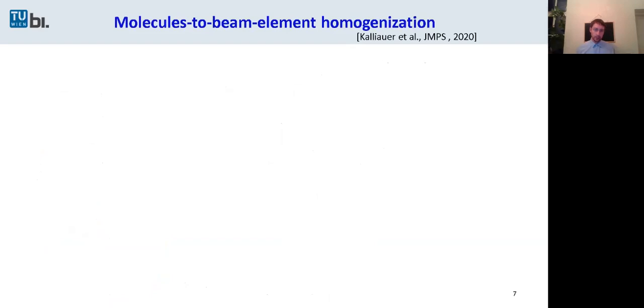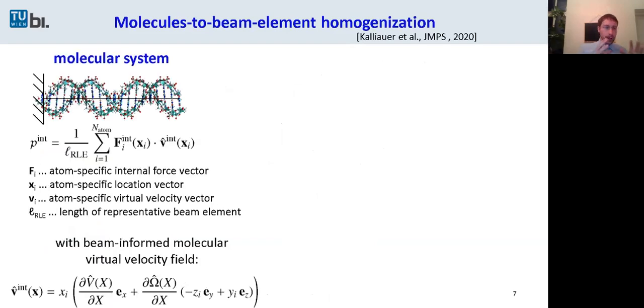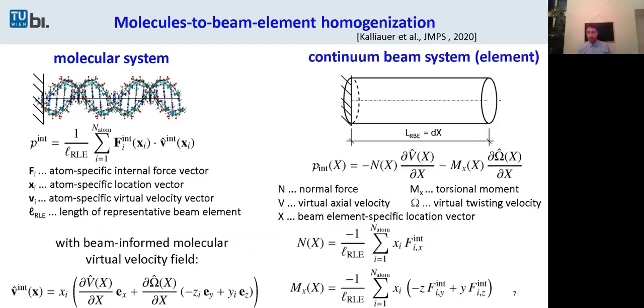So here's how we do this homogenization. On one side, we have the molecular system, where the internal virtual power density is related to the internal forces times the virtual internal velocity field. The virtual internal velocity field is related to the macroscopic stretch gradient and to the macroscopic twist gradient. On the other side, we have the continuous beam system. Here, the virtual internal power density is related to minus the normal force times the macroscopic stretch gradient minus the torsional moment times the macroscopic twist gradient. And if we now combine those two equations, we end up with the homogenization rules for the normal force and the torsional moment.